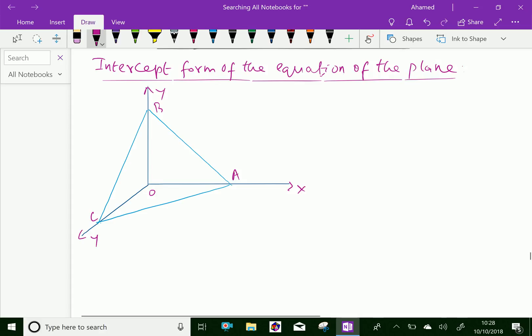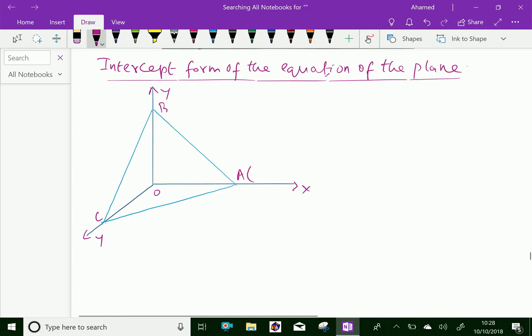And also that the plane intersects the mutually perpendicular axis at the point A as here. Suppose O to here, that point is A, means the coordinate of the point A is A, 0, 0.